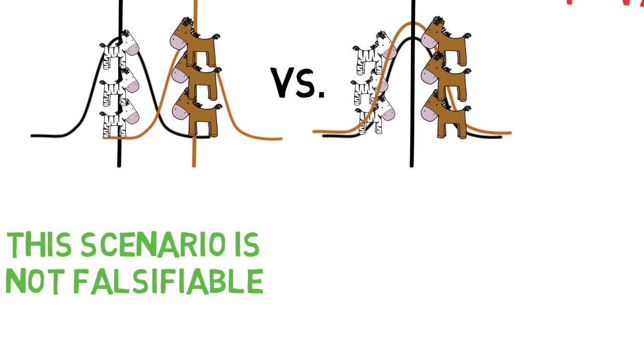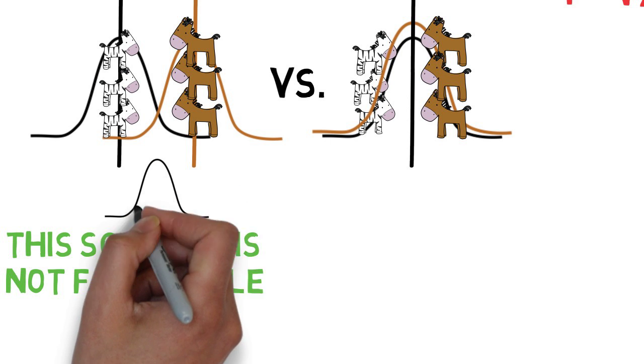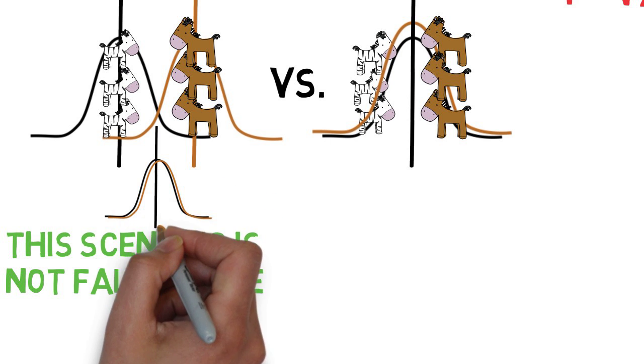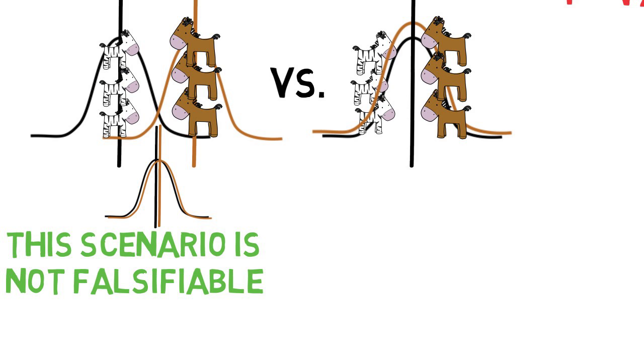This is almost impossible to show, because individual variability makes it impossible to rule out the idea that horses and zebras are actually different. Even if the samples look roughly the same, because of variability, they're never going to be actually the same, and we can never completely rule out the idea that the average sizes of horses and zebras are really a tiny bit different.